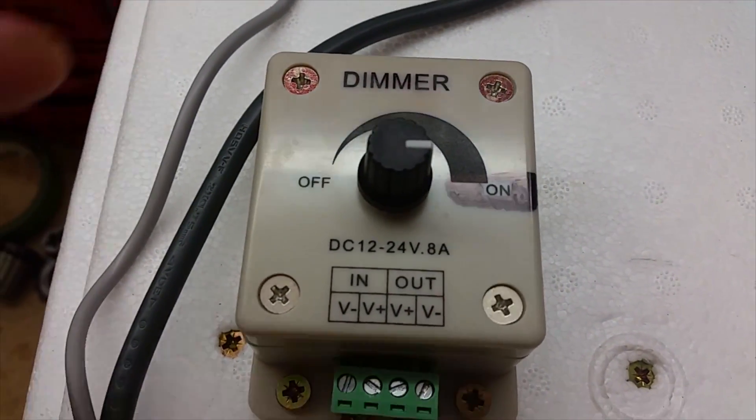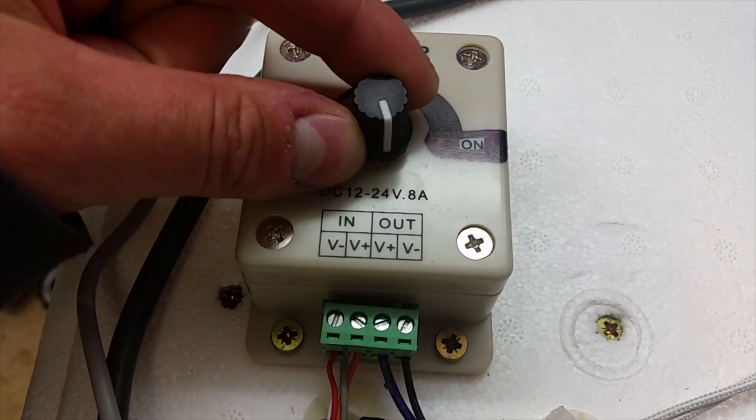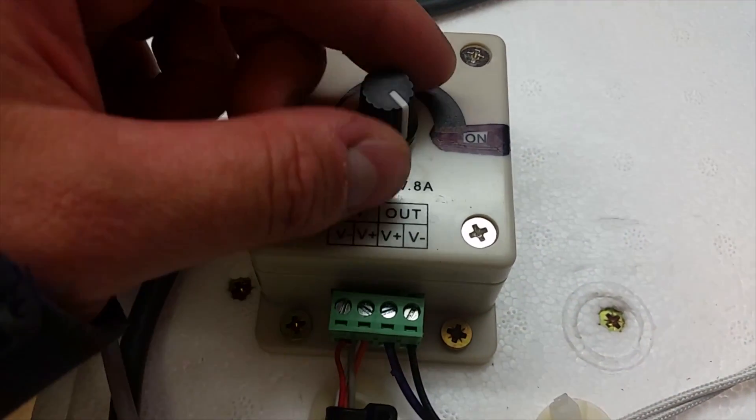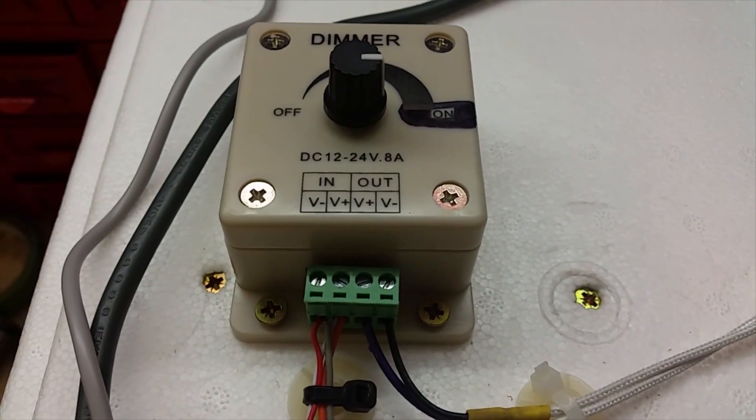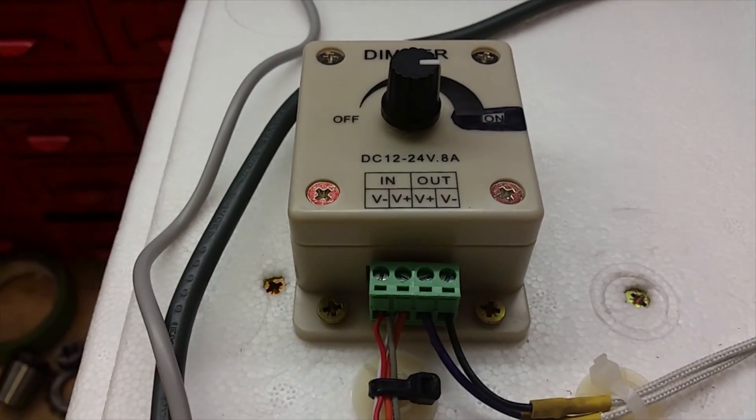We've got it permanently hooked up to this dimmer switch, and we've found that we have it at this position, which is marked as on, but actually this dimmer will actually go further than that or the bulb will go brighter than that. We have it to this position, then it holds the temperature at about 36 degrees C.